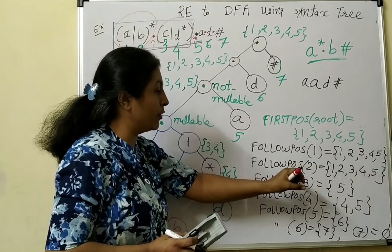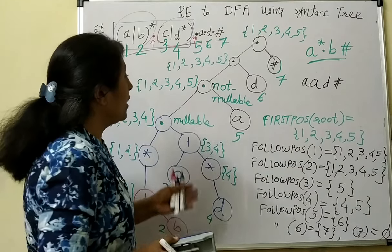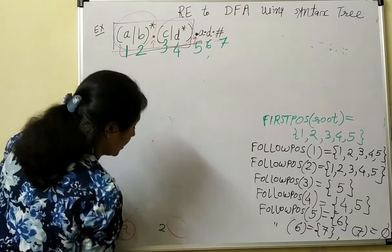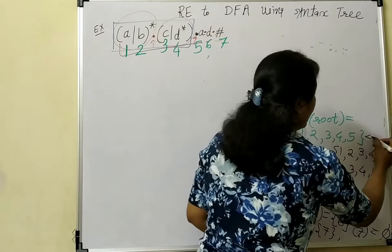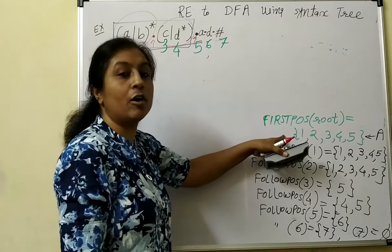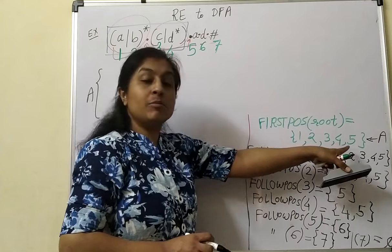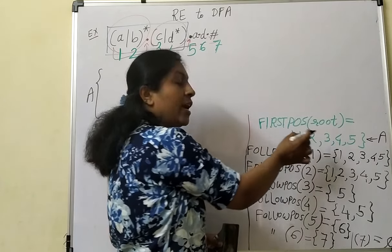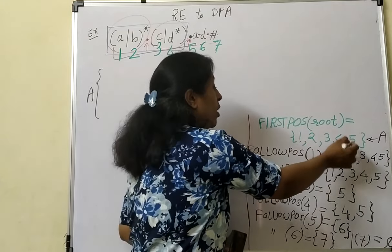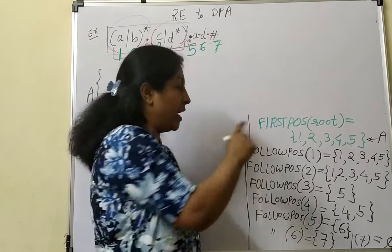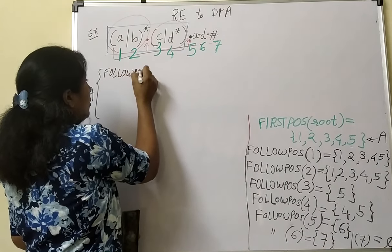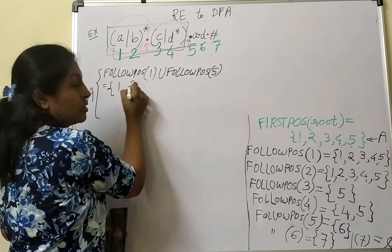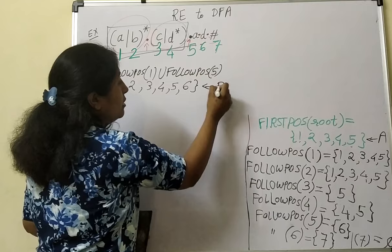Now we can apply the method to construct the states of the DFA. First position of root gives new state A, which is the start state. Take each symbol from A and construct new states. Symbols 1 and 5 have the same input symbol A, so take their union: follow(1) ∪ follow(5) = {1, 2, 3, 4, 5, 6}, giving new state B.